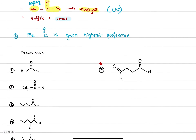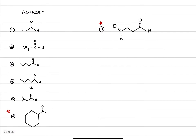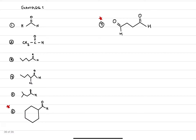Rule number three is that the carbonyl group, the C=O, is going to be given the highest preference. Let's dive into the examples. In the first case, I can see that there is only one carbon involved, so that brings 'meth' to mind — the meth which comes from the root word of one carbon. And because I see this CHO group, this means there's an aldehyde.